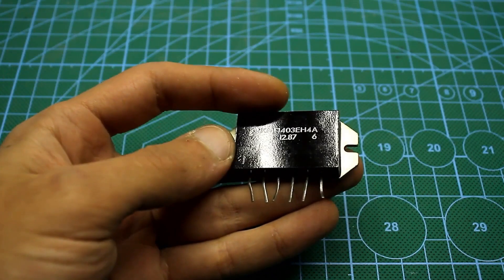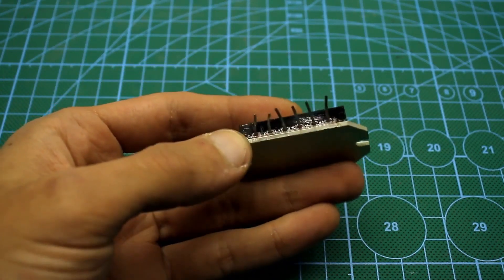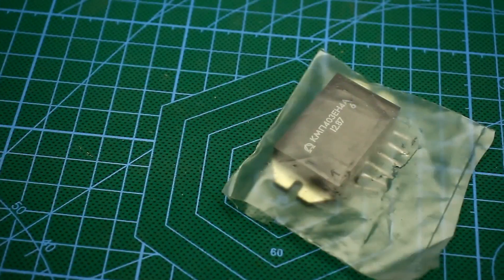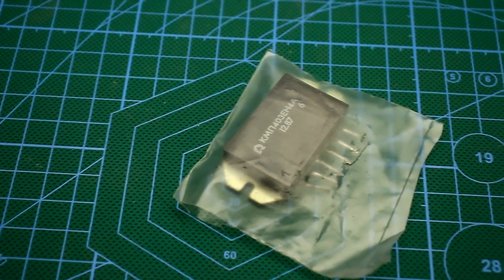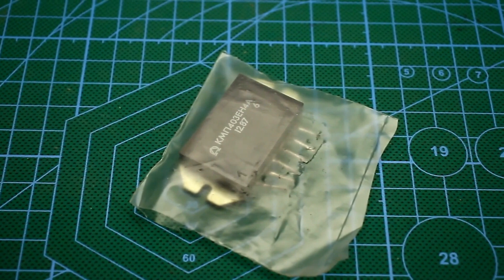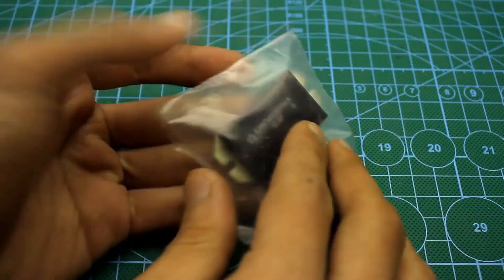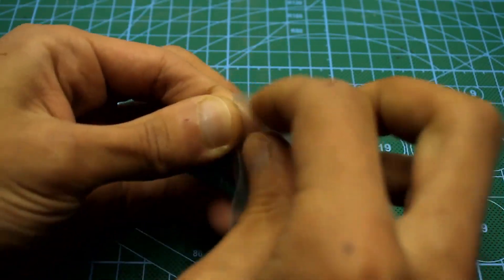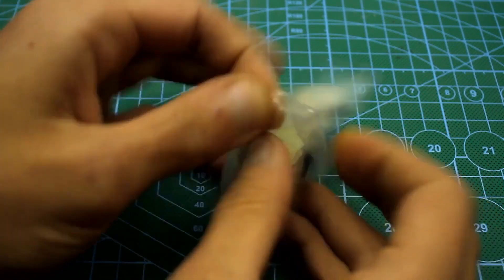Hello everyone. I've had this interesting microchip lying around and used for a long time, even in its factory packaging. But today we will disturb its peace. The microchip or microassembly is from 1987, manufactured in the USSR.